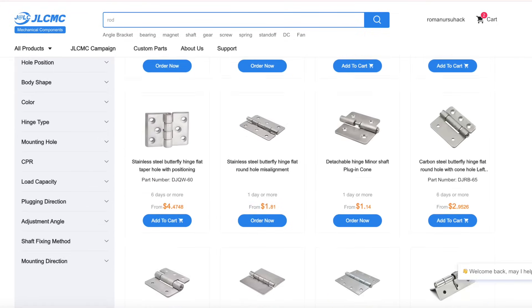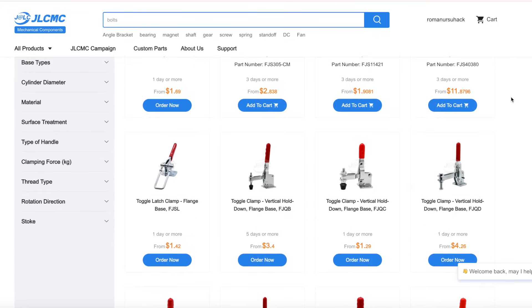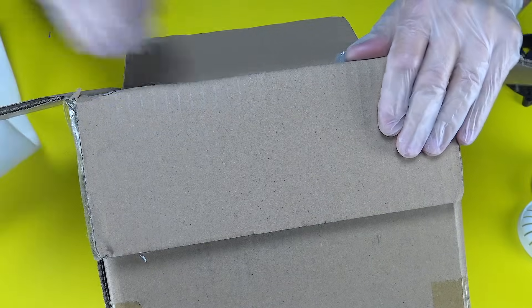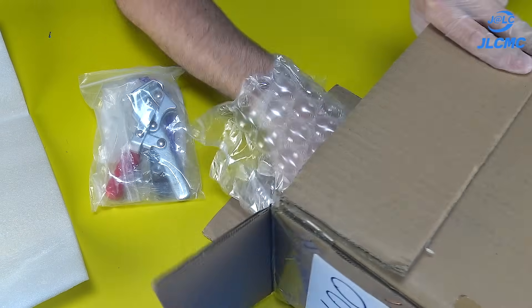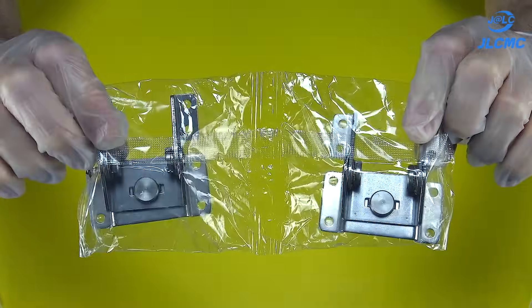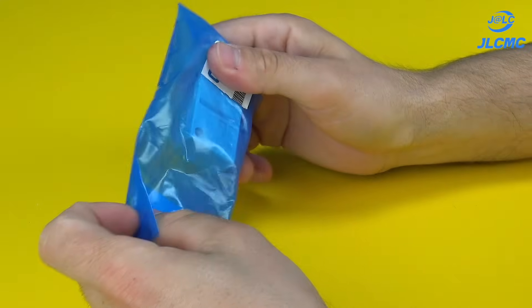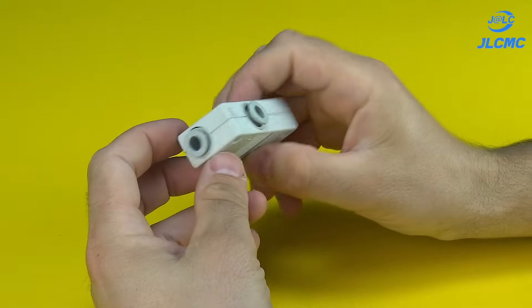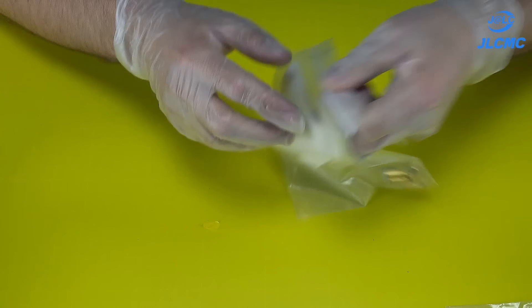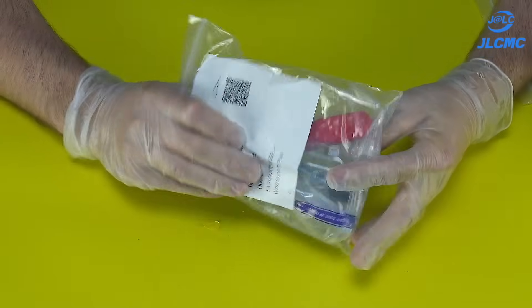Honestly, I haven't found this level of quality at these prices anywhere else. And guess what? The package arrived in just six days. That's impressively fast, especially for international shipping. If you're curious and want to check it out for yourself, the link to the store is in the description below the video. Go take a look. The product quality is excellent, the delivery is fast, and JLCMC regularly surprises customers with bonuses and discount coupons.